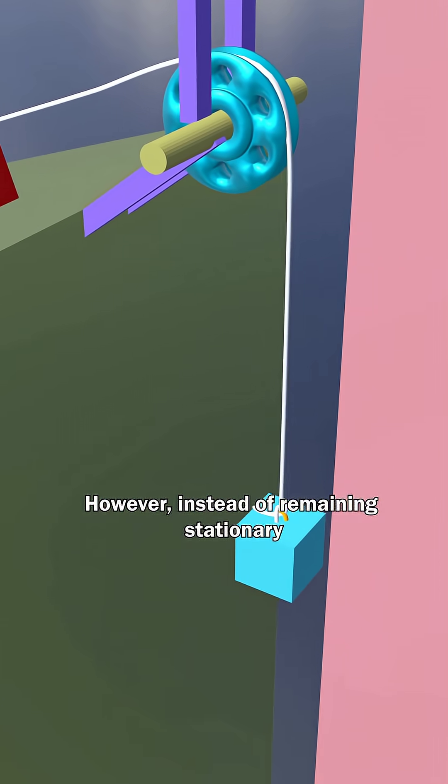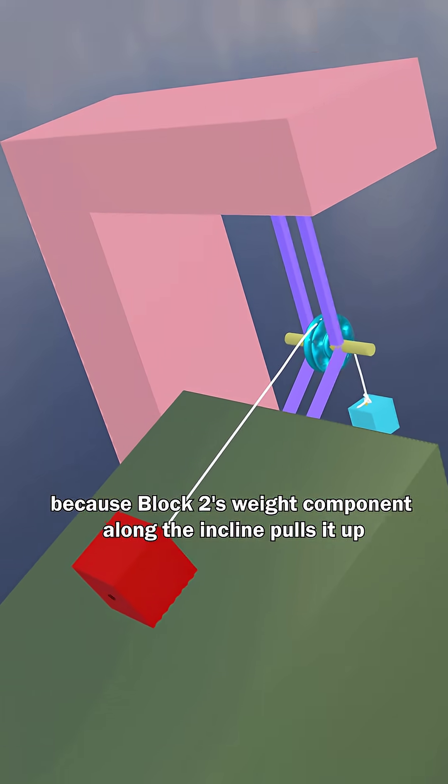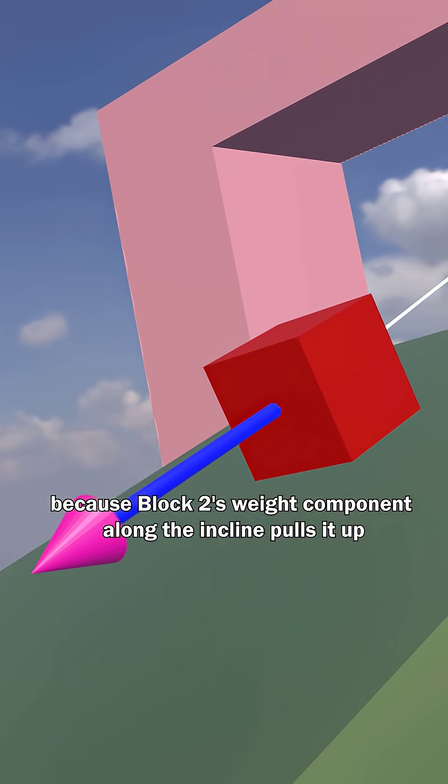However, instead of remaining stationary, block 1 starts moving upwards. This happens because block 2's weight component along the incline pulls it up.